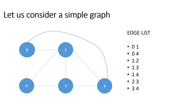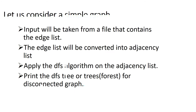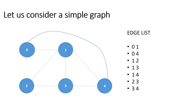The edge list contains all the edges of a graph — the starting and ending vertex of each edge. The first edge is between 0 and 1, so it's 0,1. Then we have 0,4 — 1,2 — 1,3 — 1,4 — 2,3 — and 3,4 in that way.